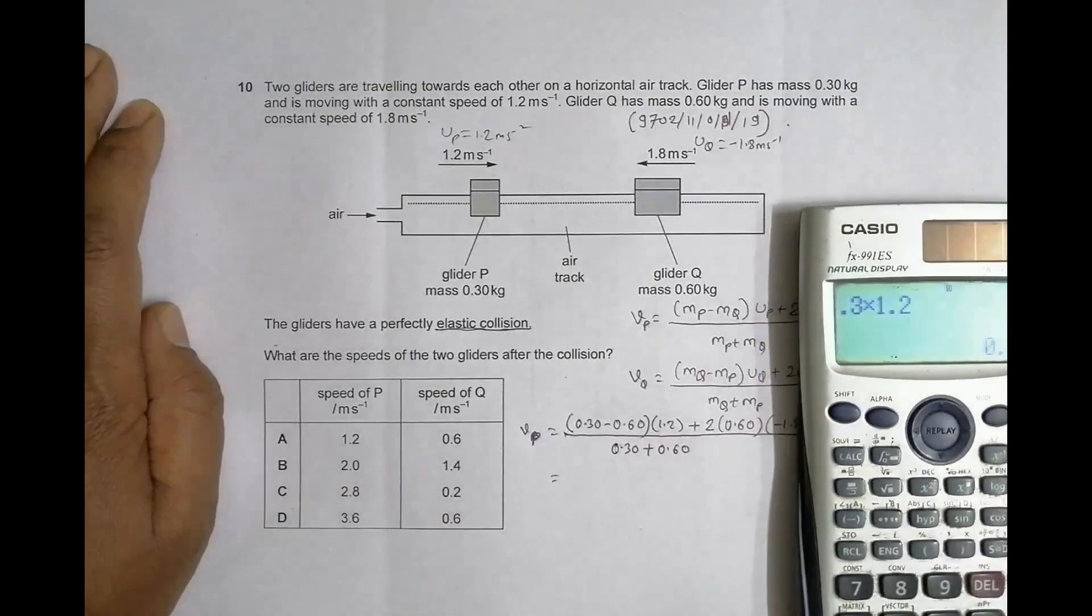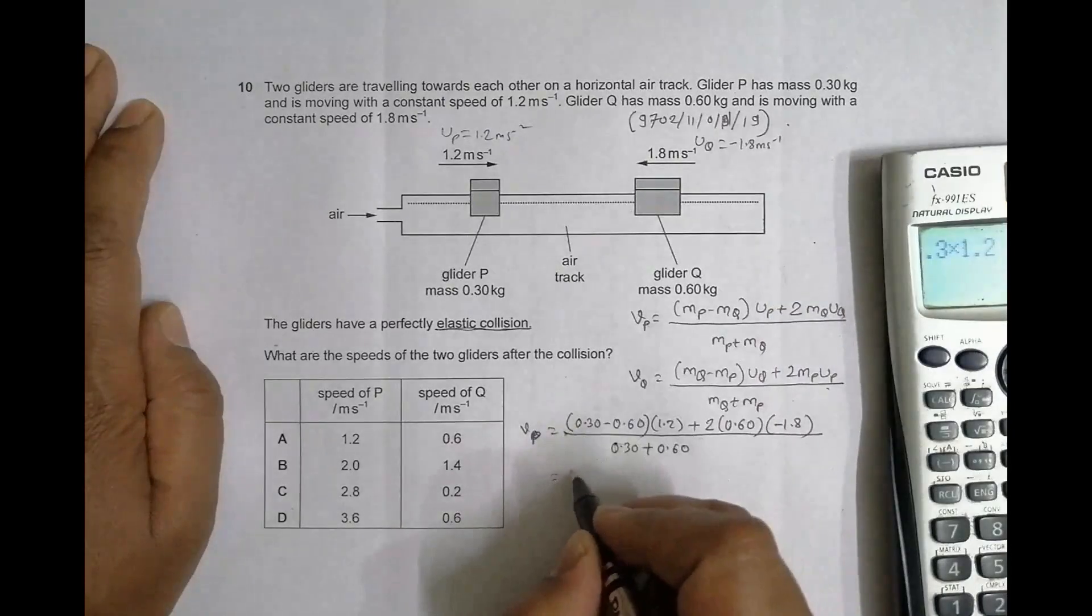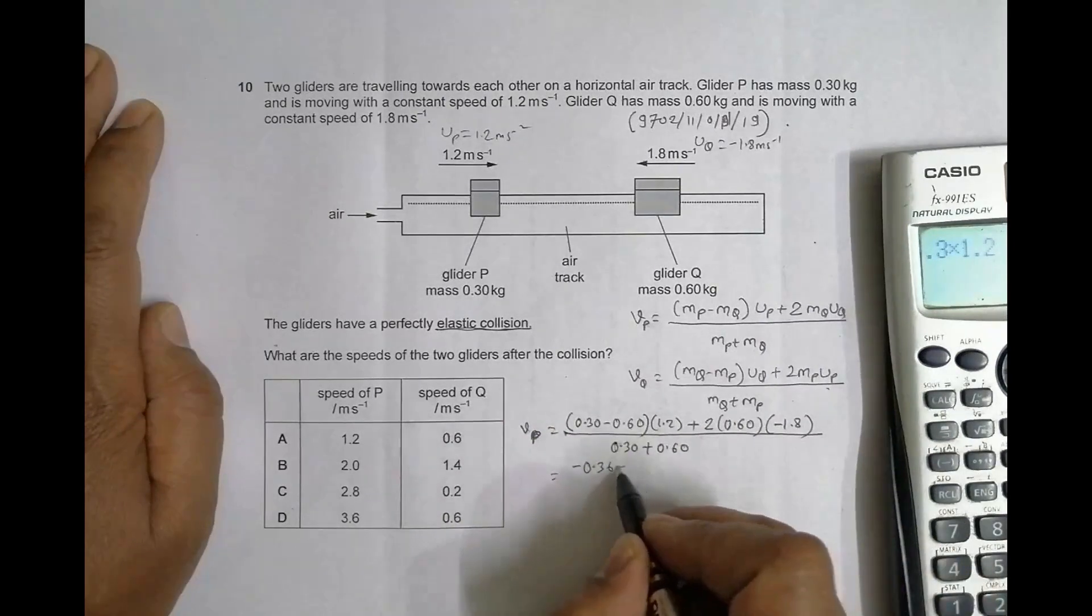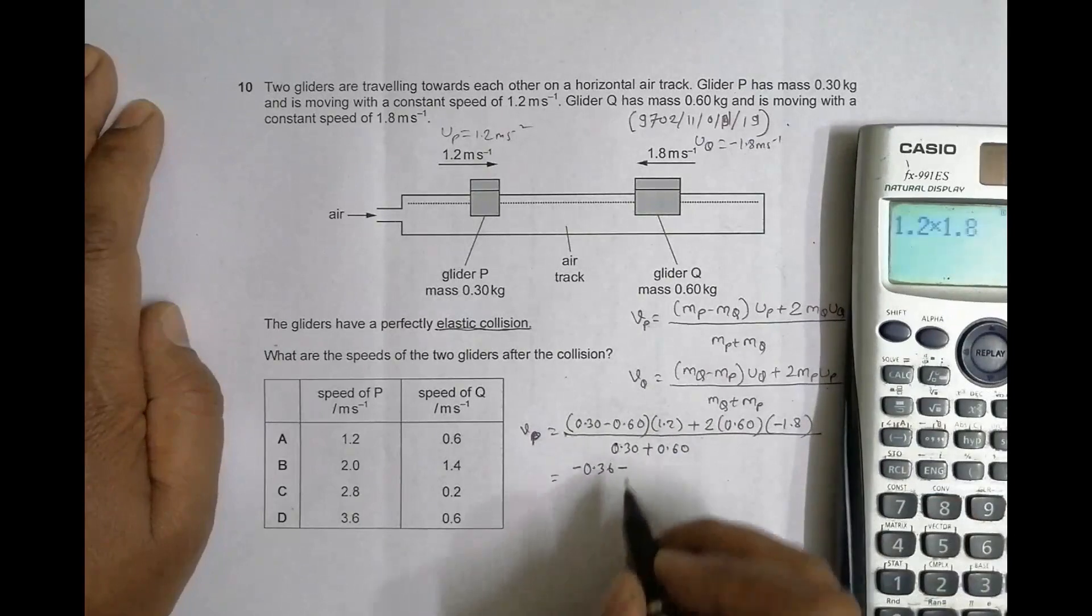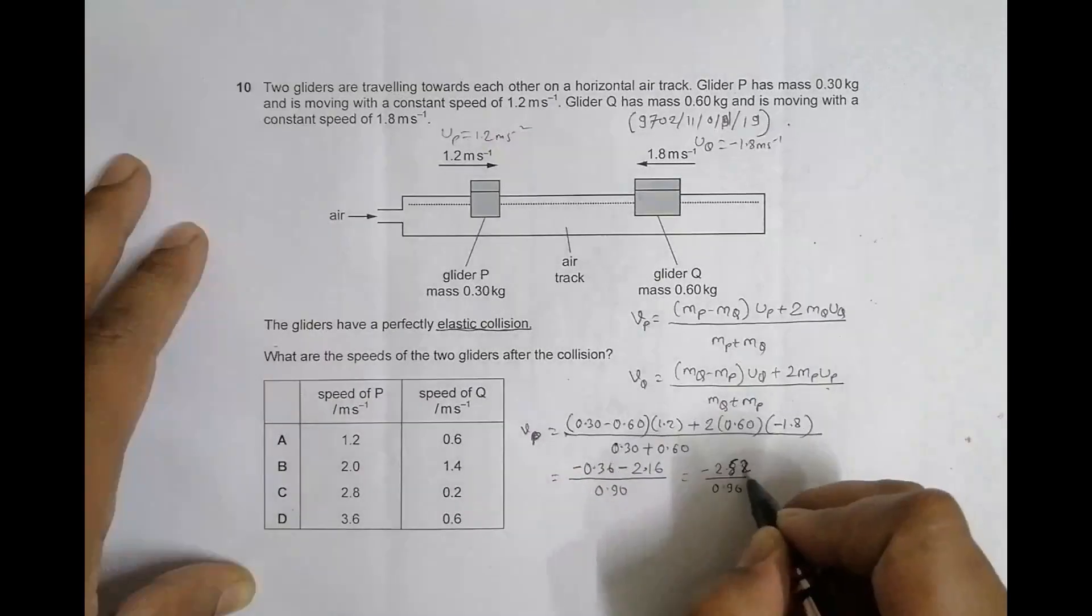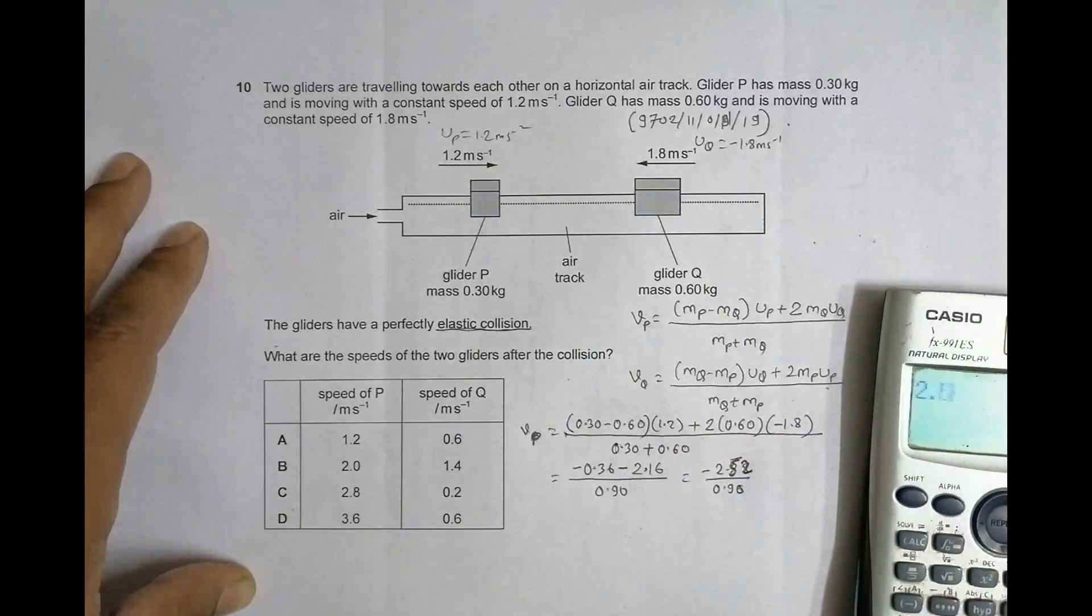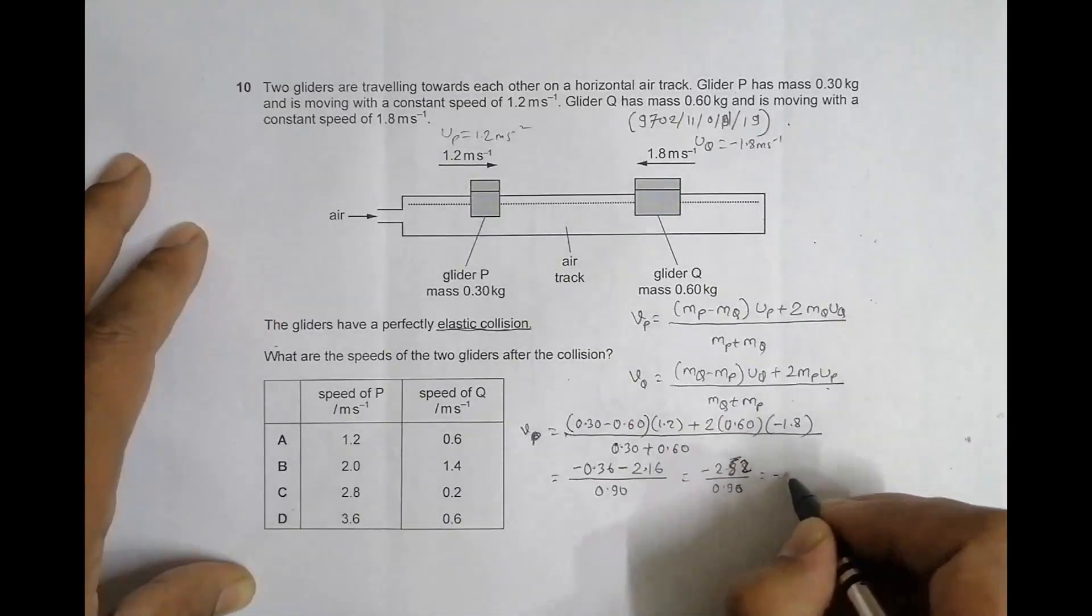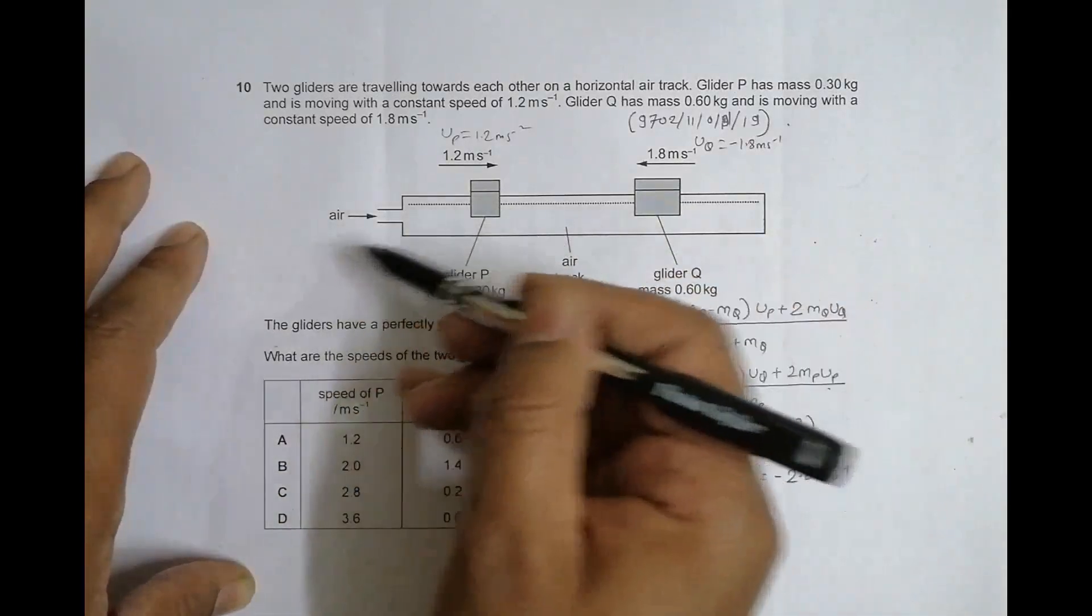So 0.30 into 1.2 equals 0.36, and it's minus, so minus 0.36. Plus - times minus is minus again, so this times this should be 1.2 into 1.8 equals minus 2.16, whole divided by 0.90. It should be 2.52 divided by 0.90, which equals minus 2.8 meter per second.